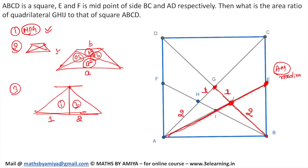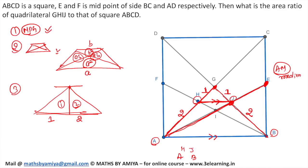Now what you have to see is only triangle AGB. The left ratio is 1 is to 2, the right ratio is 1 is to 2. By Thales theorem, I can say HJ is parallel to AB. Because Thales theorem says if you have the same ratio, then the line joining the points that divide in that ratio is parallel to the base. So now ABHJ is a trapezium.